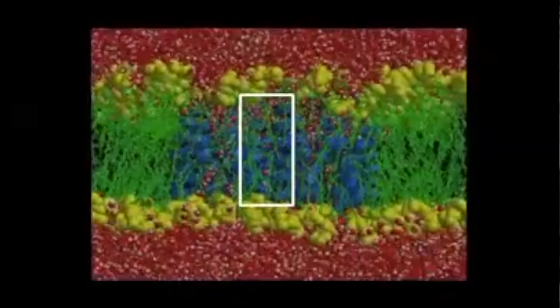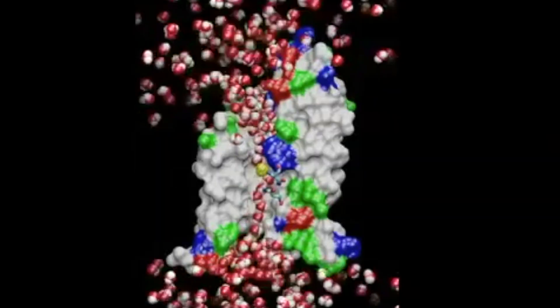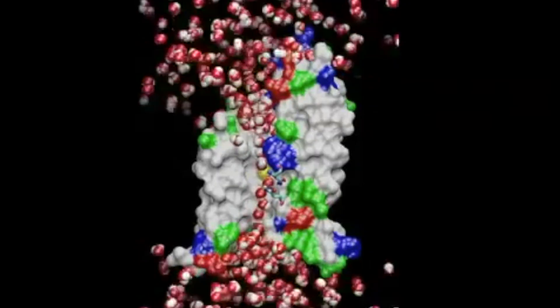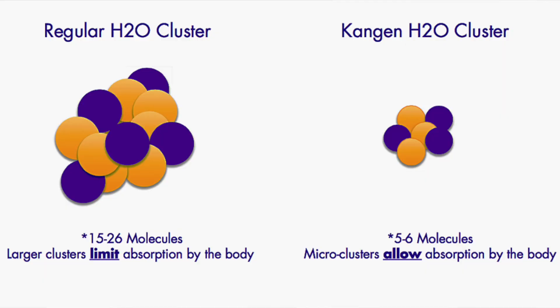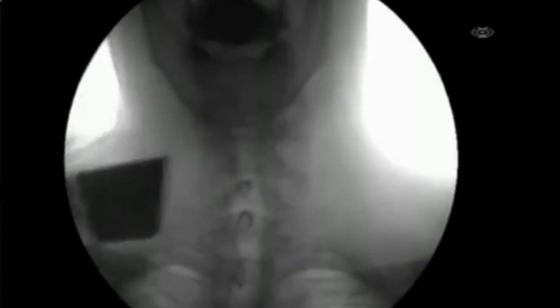What you need to understand is that we're made up of millions of cells, and those cells have little pathways called aquaporins. Those pathways allow seven water molecules to go through to hydrate the cell. Regular tap and bottled water has between 15 and 25 groups of molecules, and kangen water has between four and six.